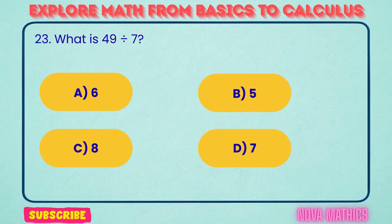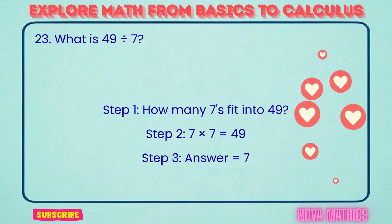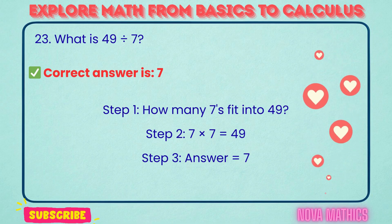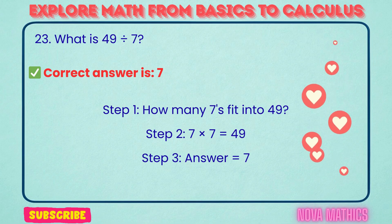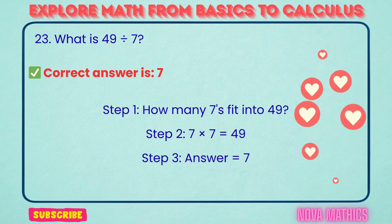23. What is 49 divided by 7? Correct answer is 7. 49 divided by 7 equals 7. We find this because 7 times 7 is 49.